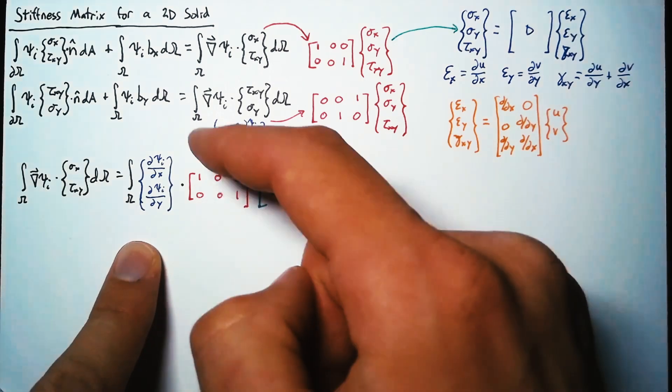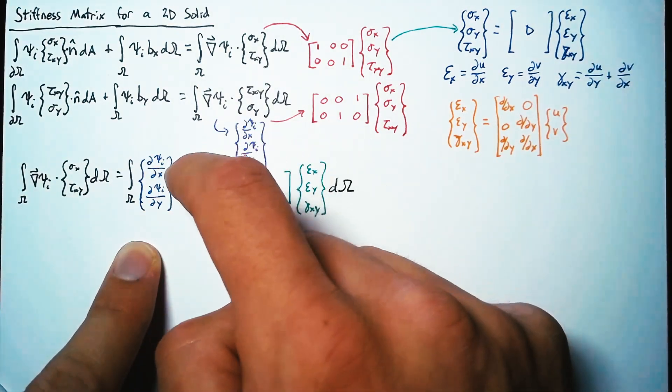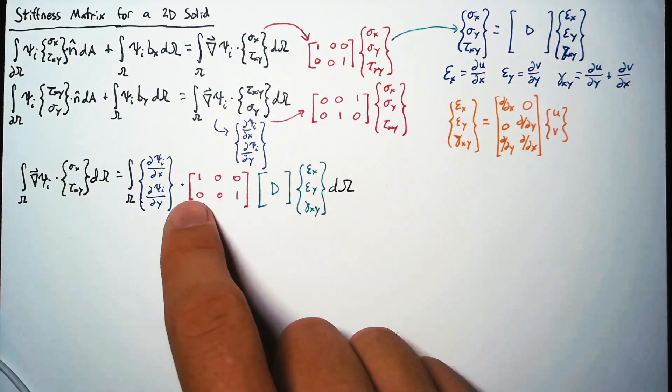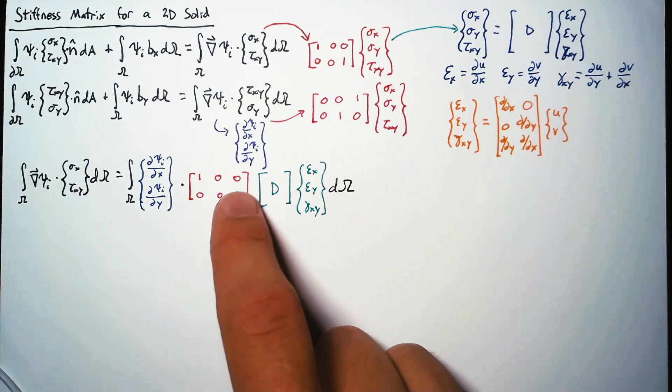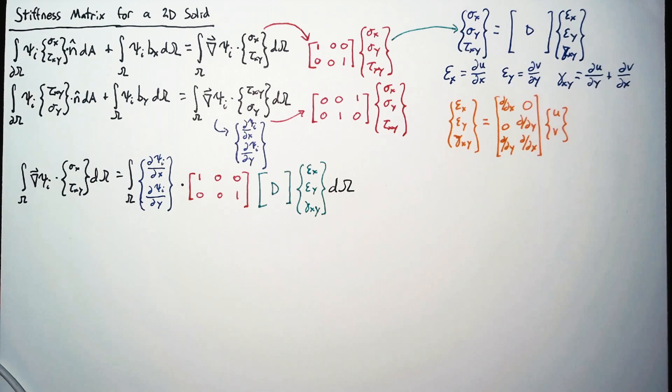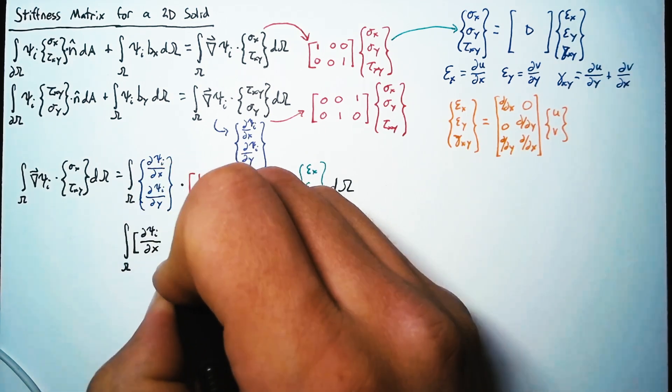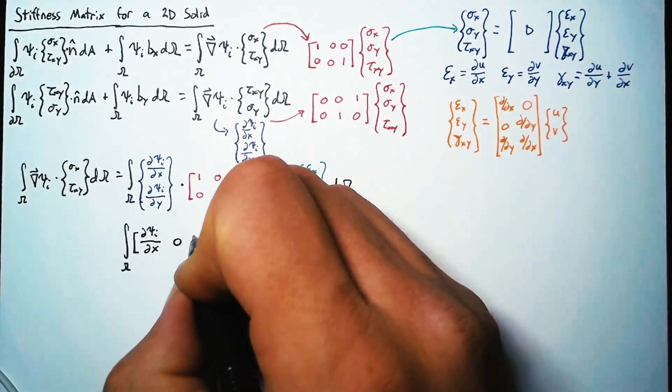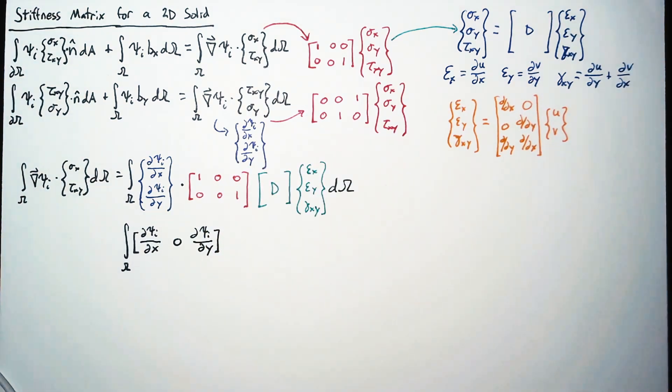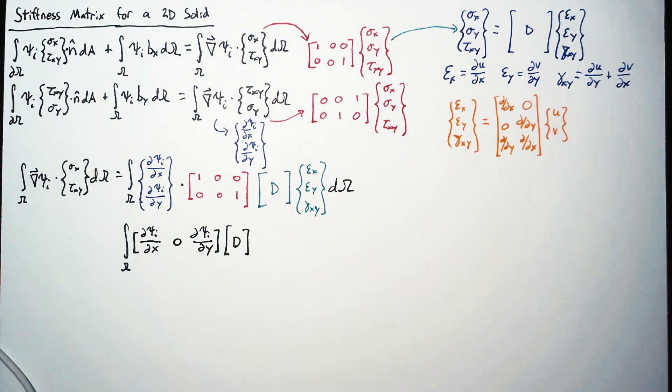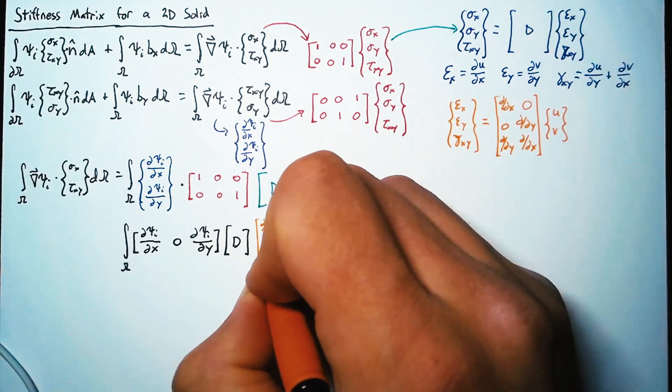Another thing we can do is to perform this dot product. So a dot product takes the top element and multiplies it by the entire top row, and then adds that to the bottom element multiplied by the entire bottom row. In the end, we expect to end up with a 1 by 3 row vector. So this will be equal to our integral over omega of d psi i dx, 0, and then d psi i dy. And then this d is not changing, so we'll just leave that alone. And then we'll plug in this representation for our strains.